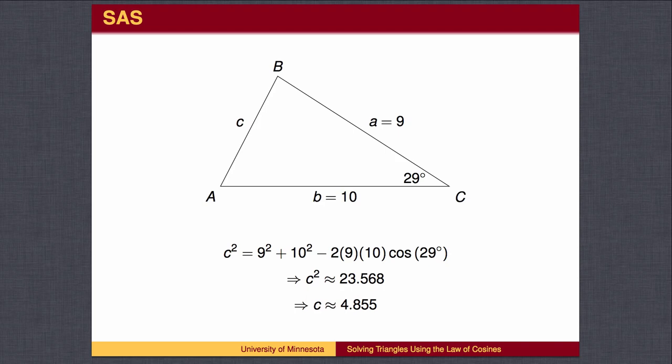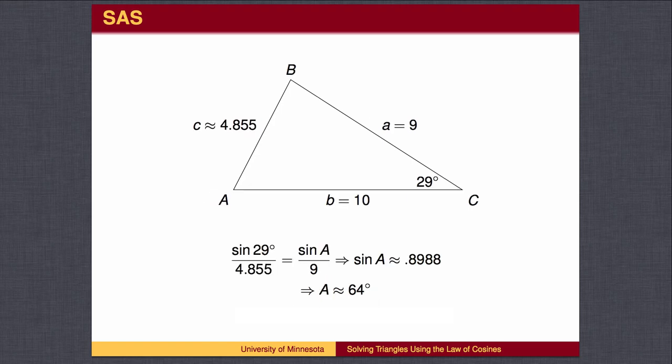Side C is found by using the Law of Cosines. You can then find the missing angles using the Law of Sines. Notice that there is only one solution listed.